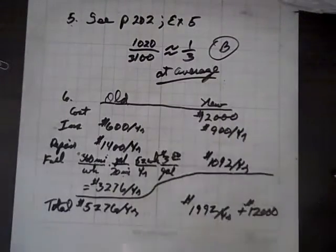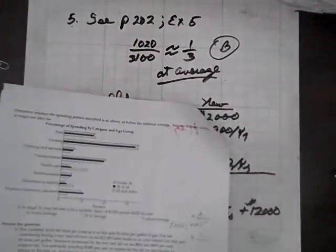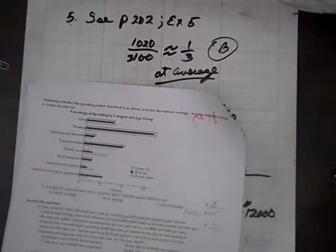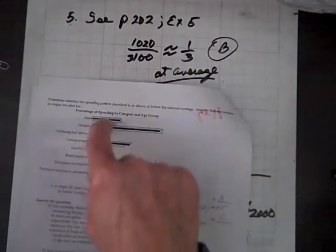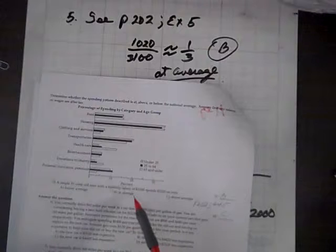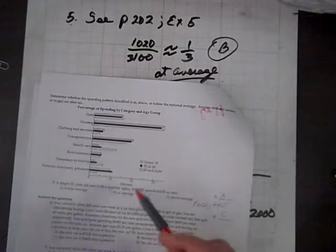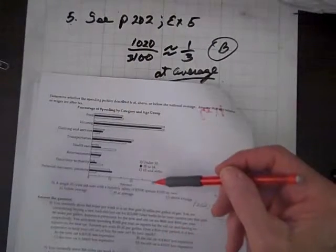Now let's go on to question 5. And again, we're going to look at page 202, example 5. And this gentleman, we'll use this chart here too, and this gentleman has an income of $3,100 and spends $1,020 on rent, which is about one third.